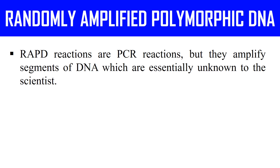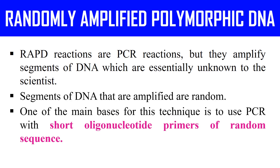What is RAPD or randomly amplified polymorphic DNA? RAPD is simply a PCR reaction in which we amplify an unknown DNA sequence using random primers. We do not know the exact sequence of the DNA fragment being amplified; we take random primers and after the PCR reaction, we get products which are randomly amplified. That is why it is named randomly amplified polymorphic DNA. It uses short oligonucleotide primers with random sequence, and it is a dominant marker which was discovered in 1990.